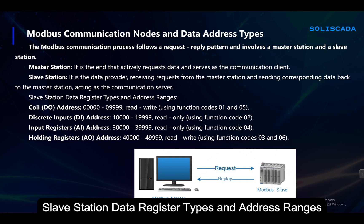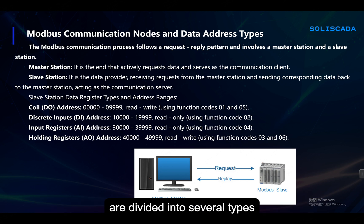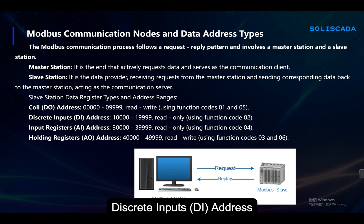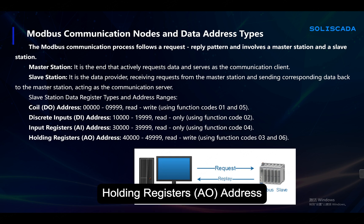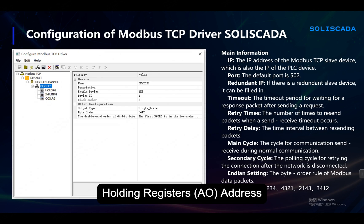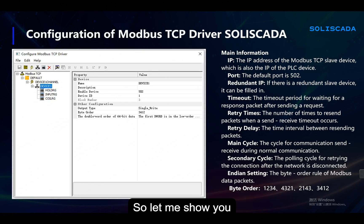Slave station data register types and address ranges are divided into several types: Coil address, Discrete Inputs address, Input Registers (AI address), and Holding Registers (AO address).